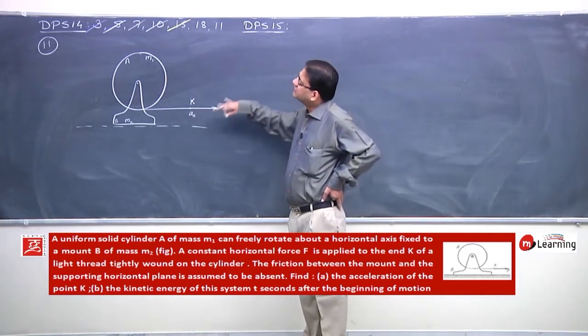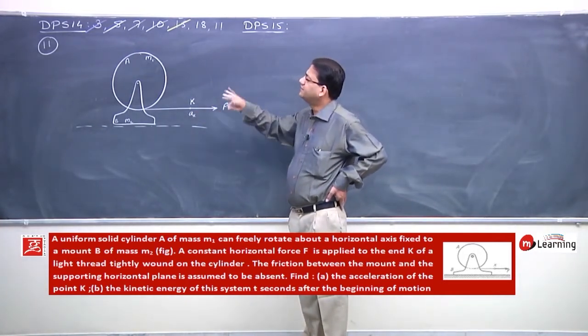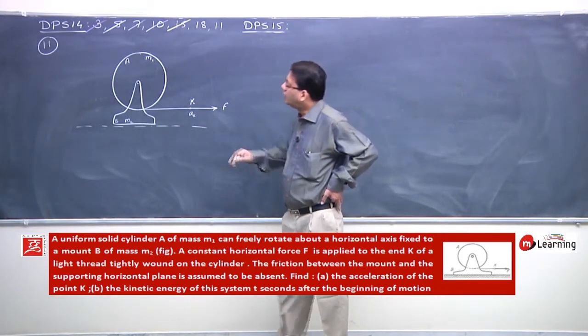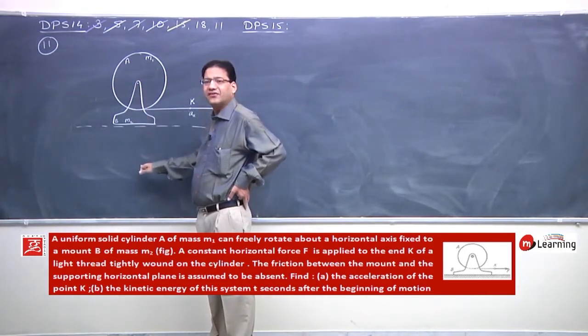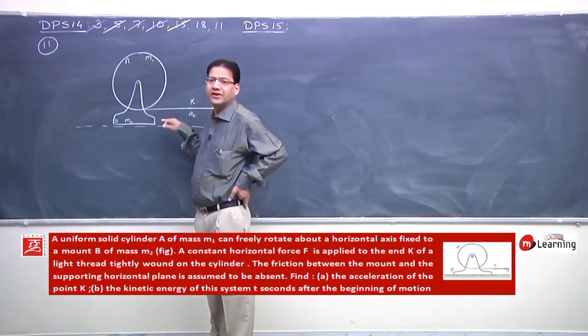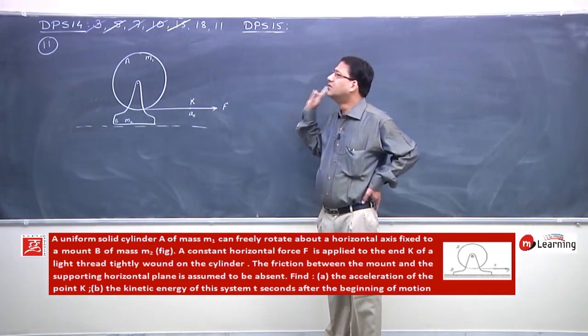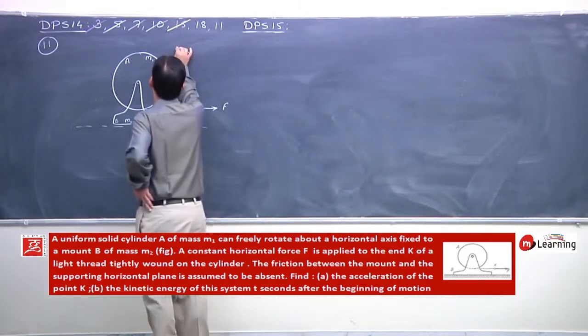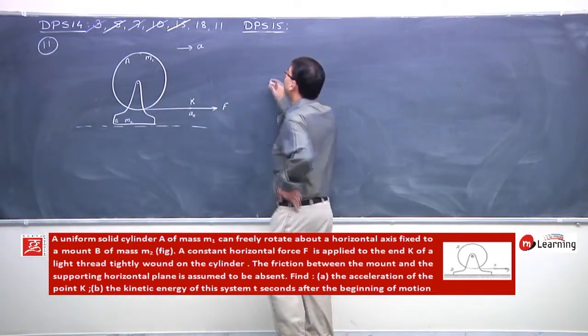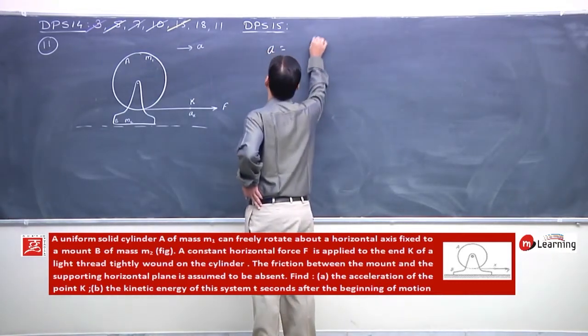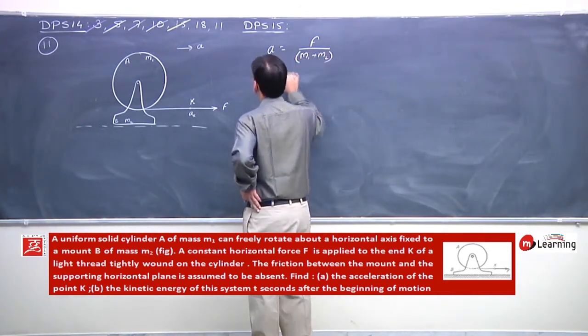We have mount and cylinder as a single system. M1 plus M2, normal force, and the force F. So this system will accelerate where this acceleration A must be F upon M1 plus M2.